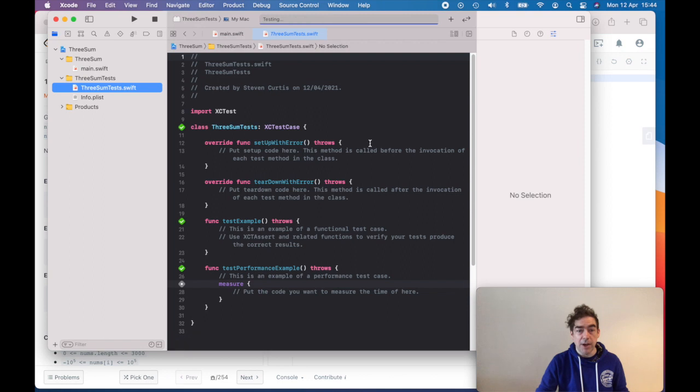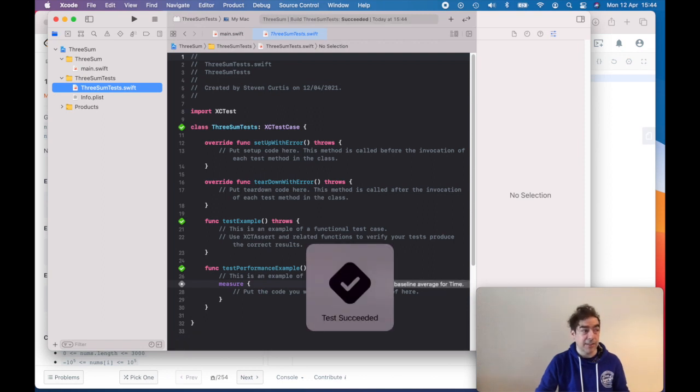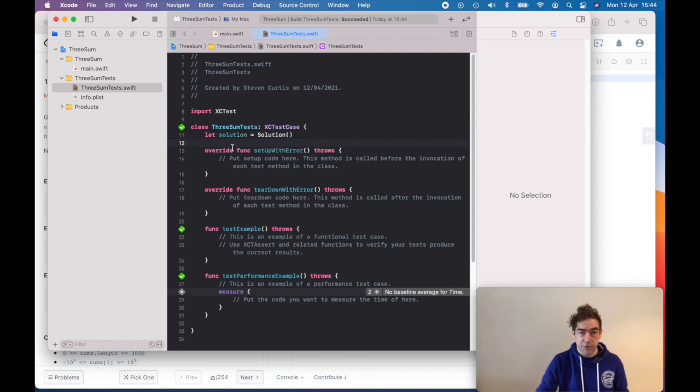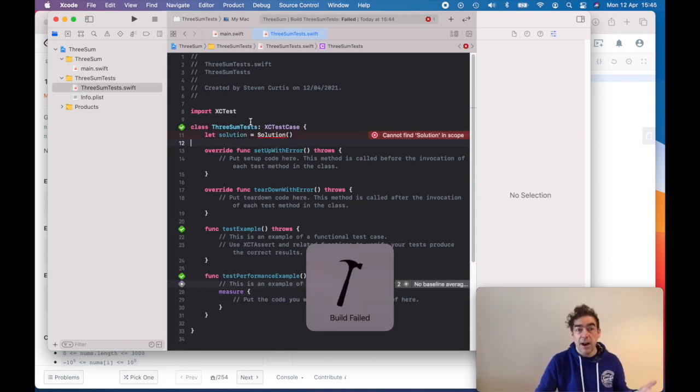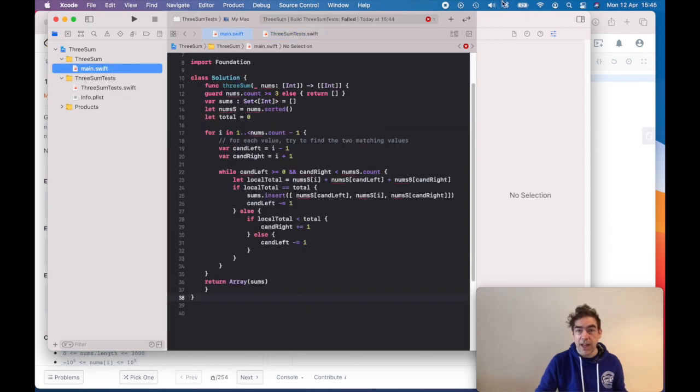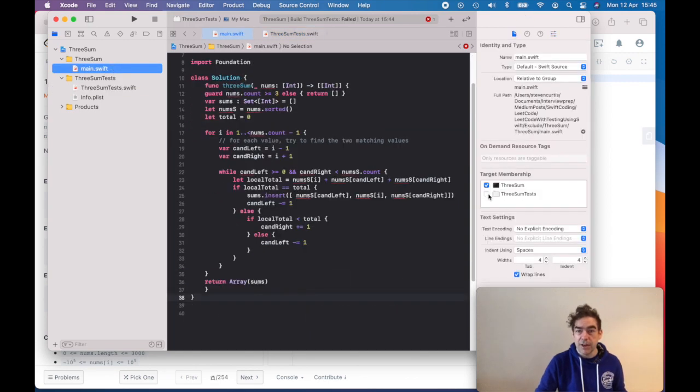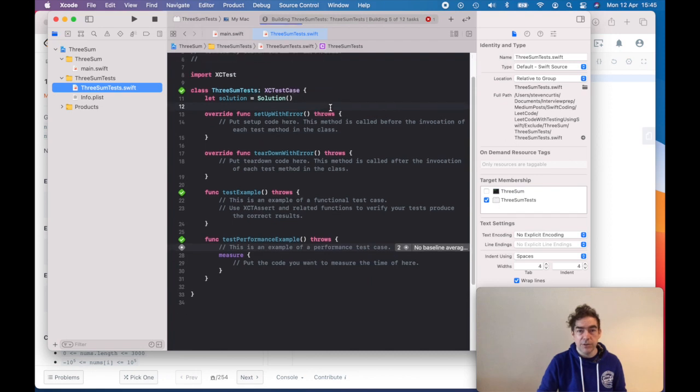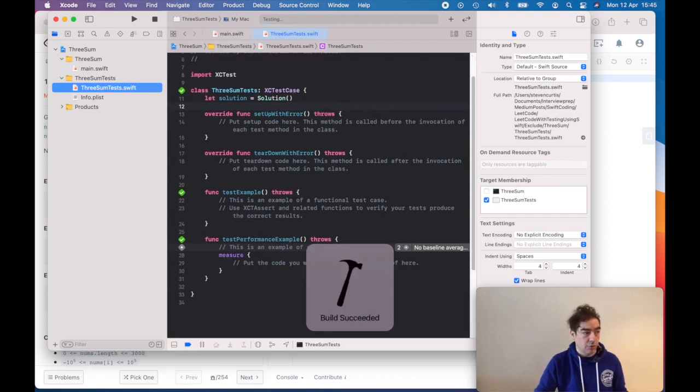But we also have to bear in mind that we're going to have to access our solution. So I'm going to be lazy and just put it there. Initially, it won't be able to see our main target. So we have to add our relevant file into the target membership of the test target. Then if I run, it should be able to run. Great.